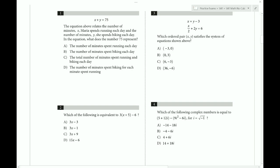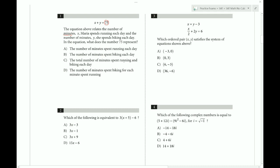The equation above relates the number of minutes x Maria spends running each day and the number of minutes y she spends biking each day. In the equation, what does the number 75 represent? Well, it looks like 75 is the total number of minutes that she spends biking or running. So let's see if that's a choice. Biking and yeah, this is the one.